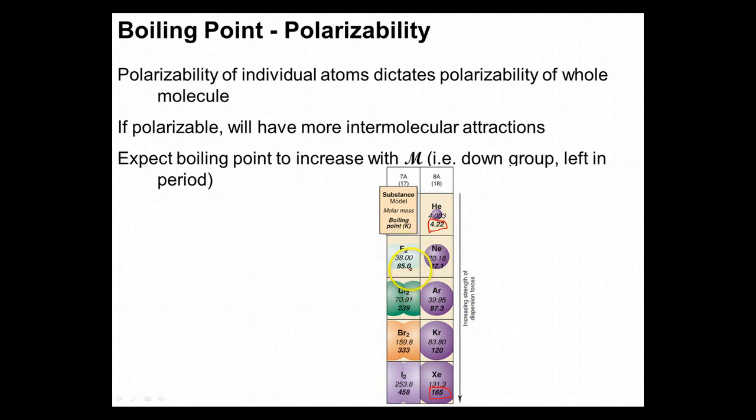Now what about when we have something like a diatomic? Well notice that we have fluorine gas, not very polarizable, massively electronegative. Only covalent because it's the same atom on the other side. It's going to boil pretty cold.